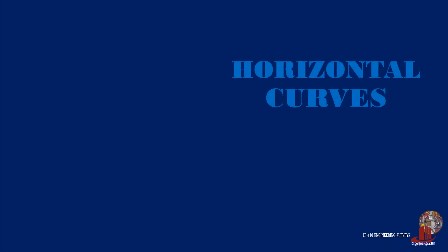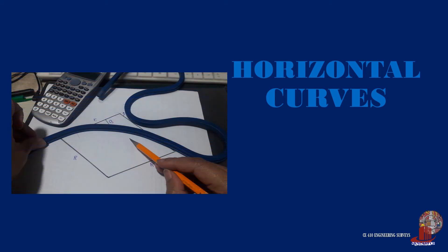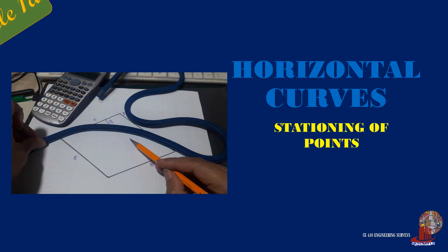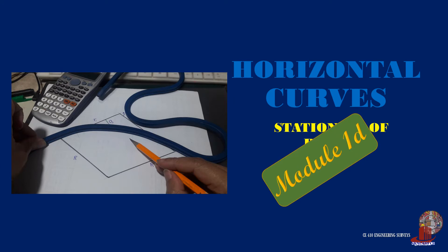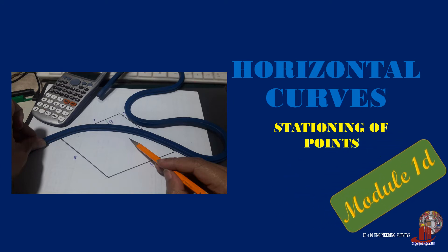The location of points in surveying uses stationing, with a particular format for the points. In SI units, the station 1 plus 500 would mean 1,500 meters away from a certain origin. Learn the procedure for identifying points in the curve here in engineering surveys.